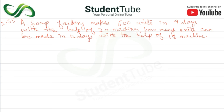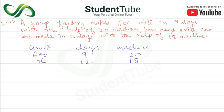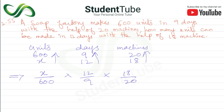Next is question 2.55: a factory produces 600 units in 9 days with the help of 20 machines. We write: units, days, and machines. 600 units are made in 9 days with 20 machines. How many units will be produced in 12 days with 18 machines? Since days are increasing from 9 to 12, units should also increase — so this is a direct proportion.